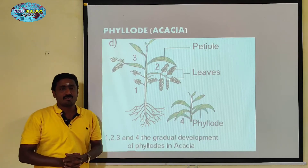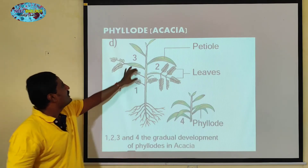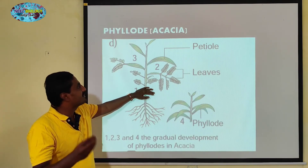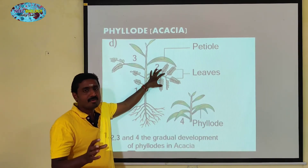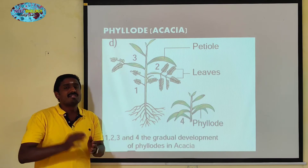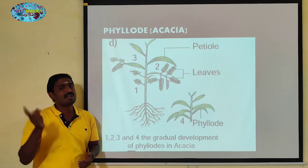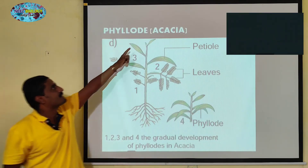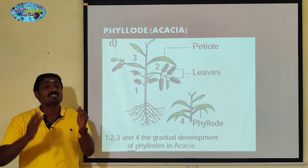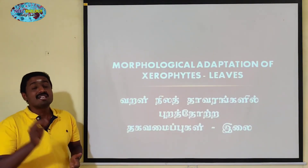It will be adapted as leaves — this leaf is modified as leaves. In the starting stage and the tender stage, this leaf is a petiole which will be modified into leaves. The most important thing is to find out different features. It's called phyllode. Phyllode is acacia. The morphological adaptations of xerophytes in leaves include these characters.